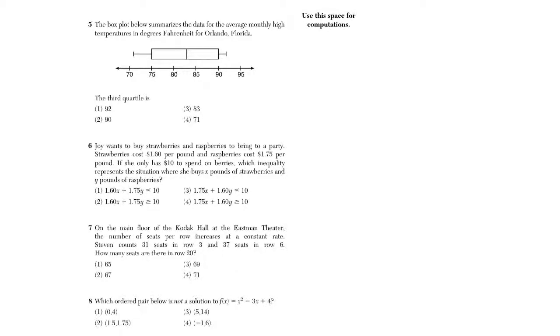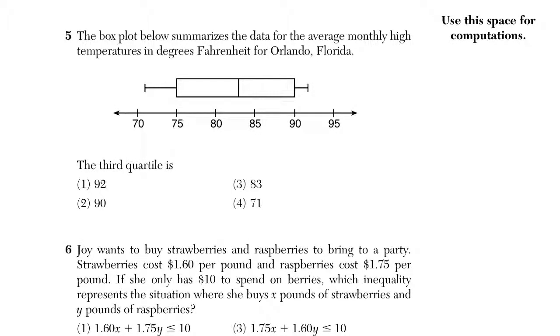Hello everyone, in this video we're going to be taking a look at the June 2018 Algebra 1 Regents, specifically questions 5 through 8. In number 5, we're asked about box plots. As a reminder, with box plots there's really five components.